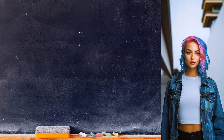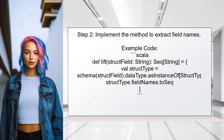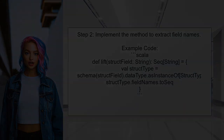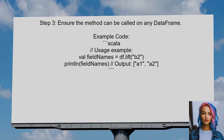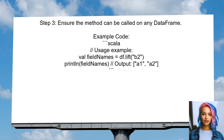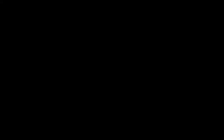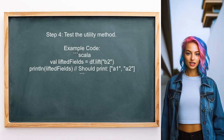To create a utility method that lifts fields from a struct in Spark SQL, start by defining an implicit class that extends the data frame functionality. Next, implement a method within this class that takes the name of the struct field as input and returns a list of its nested field names. Ensure that it can be called on any data frame, allowing you to easily lift fields from the specified struct. Finally, test the utility method by calling it on your data frame and printing the results to verify that it works as expected.